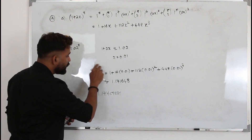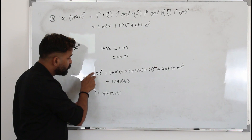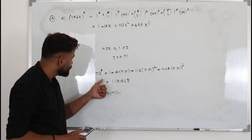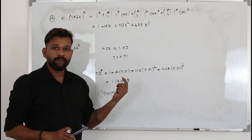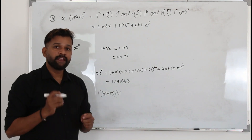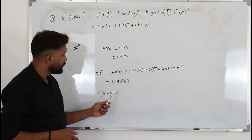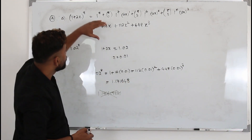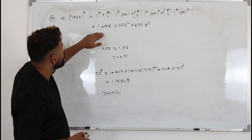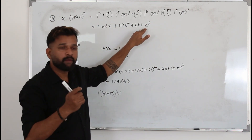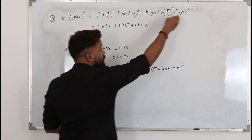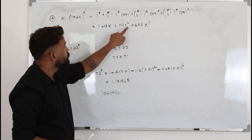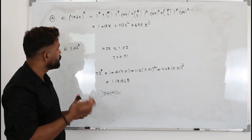However, the question will ask you to state this without finding the actual calculator value. So how do we reason it? The value we got came from the binomial expansion, but we only took terms up to x³. There are several more terms — x⁴, x⁵, and so on.